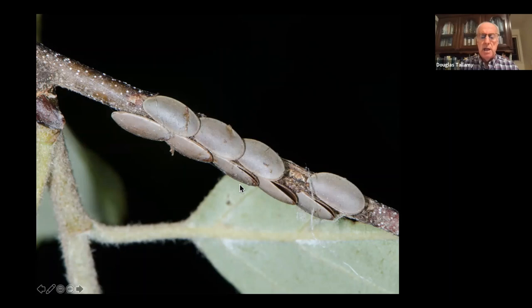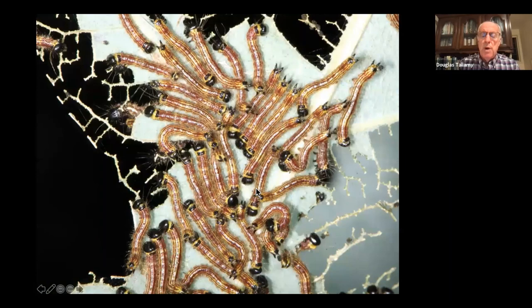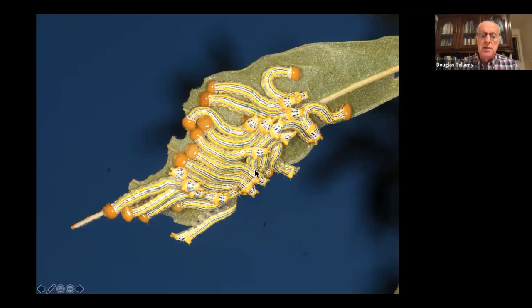August — we're getting on in the summer. From the moment oak leaves expand, they get tougher and tougher each day as a defense against leaf eaters. One way to get around that is through gregarious feeding. This is the yellow-neck caterpillar, and they've found that when everybody eats together, all those little mouths can get through that tough material. The orange-humped oak worm and the pink-striped oak worm also feed gregariously — very common in August.